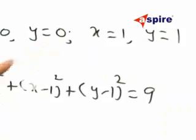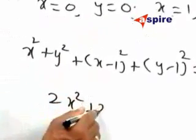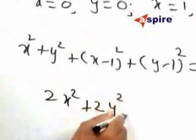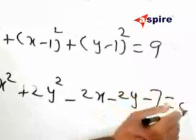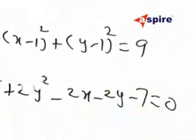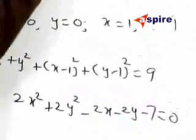I have translated the given data in terms of mathematics. That gives you 2x² + 2y² - 2x - 2y - 7 = 0, which is the equation of a circle. Therefore, the locus of P is a circle.